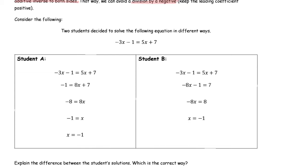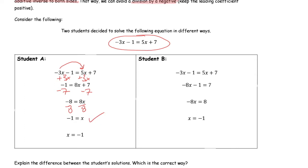Let's take a look at two students working through the same equation: negative 3x minus 1 equals 5x plus 7. Student A is going to move the negative 3x over — they add 3x to both sides because negative 3 is smaller than 5. Then they subtract 7 from both sides, getting negative 8 equals 8x, and dividing by 8 gives negative 1 equals x. We typically put x on the left-hand side just to communicate the answer.